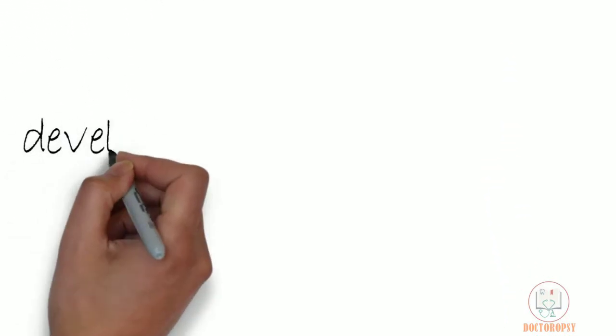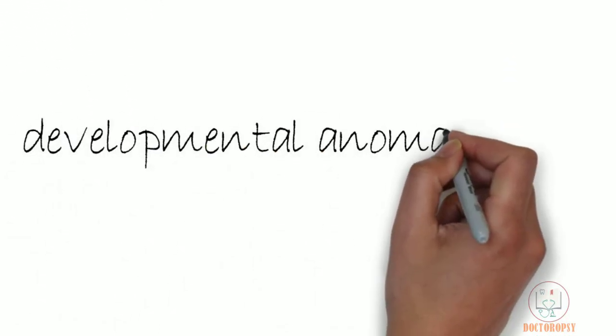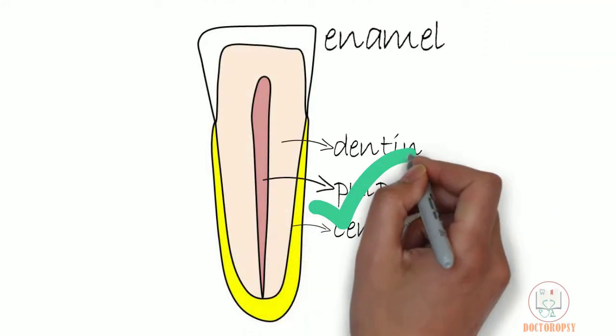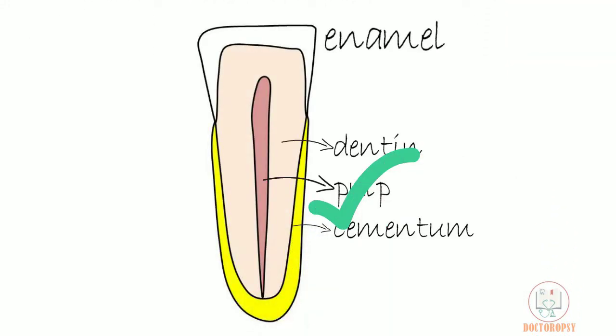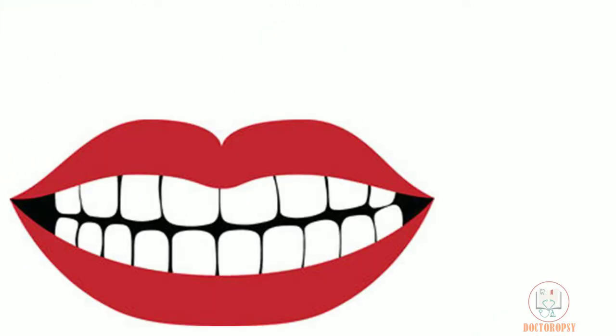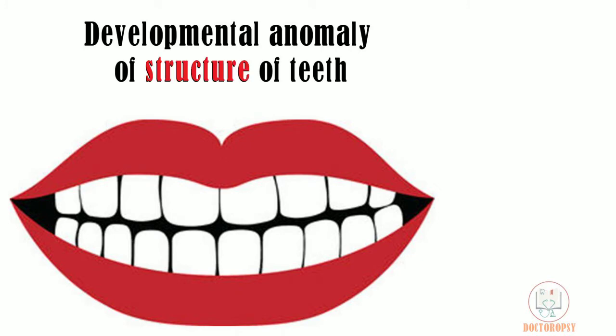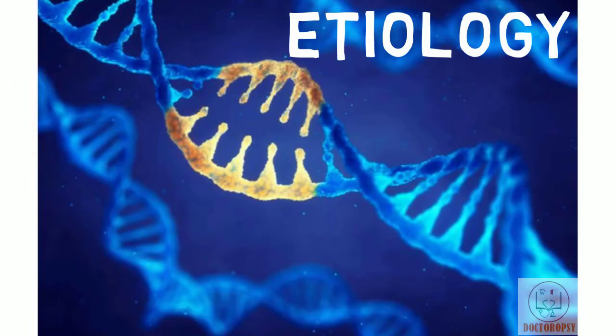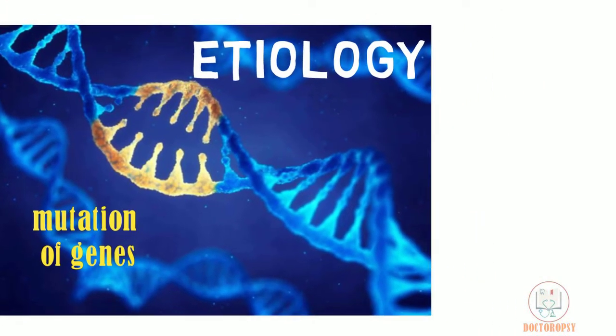Amelogenesis imperfecta is a developmental anomaly of the teeth. This anomaly is restricted only to enamel and no other tissue of the tooth. Moreover, there is absence of any systemic disorder. The defect causes abnormality in the structure of enamel and therefore affects the clinical appearance and functioning of the teeth.